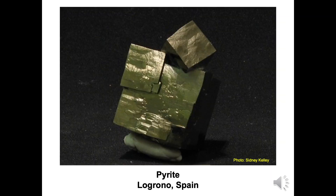94 naturally occurring elements combine to give us an estimated 6,500 different minerals. This photo shows cubes of pyrite that grew together. Pyrite is a mix of iron and sulfur. As you can see, pyrite is a lustrous, brassy, gold-colored metallic mineral. Pyrite can be found in rocks that also possess gold. However, pyrite's similarities with real gold stop there. Pyrite is still known as fool's gold.